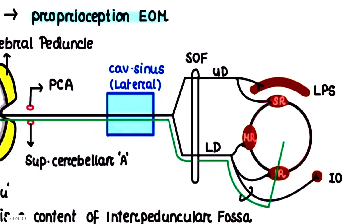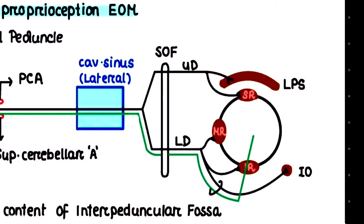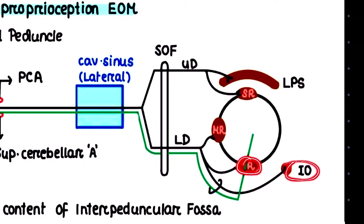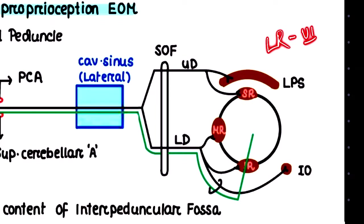In the orbital cavity, the upper division supplies the levator palpebrae superioris and superior rectus. The lower division supplies the medial rectus, inferior rectus, and inferior oblique muscles. The remaining two extraocular muscles are supplied by other cranial nerves: lateral rectus is supplied by the sixth cranial nerve, and superior oblique is supplied by the fourth cranial nerve.